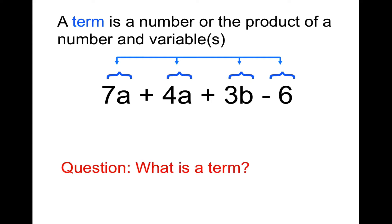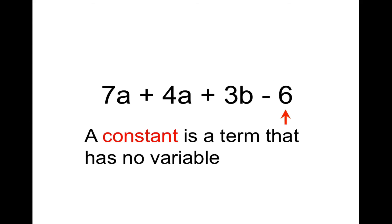Next definition: constant. A constant is a special kind of term, any term that has no variable. In this case, I would call it negative 6 because the minus sign goes with it.